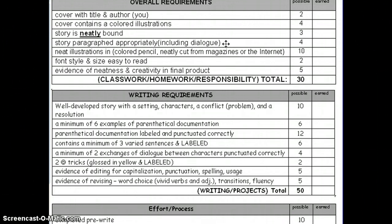Within the book, there need to be neat illustrations. Students can choose to do them in colored pencil, or they could print out pictures from their research showing what the clothing, food, or housing might have looked like to go along with their story. All of this should reflect what the time period was like. I gave them the comparison that if a kid were going to read your storybook, they should still be able to learn some things about what life in Victorian England was like.